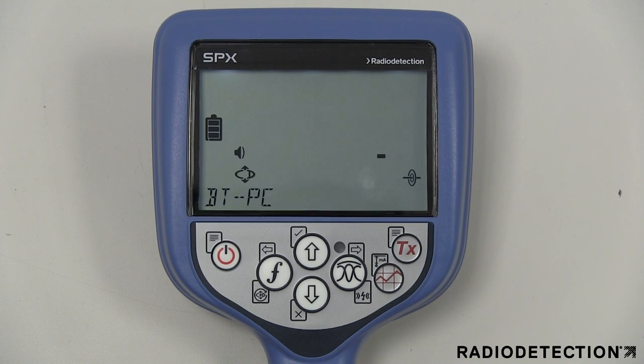The BT PC option allows you to turn on or off the sending of data automatically to a connected PDA or computer.